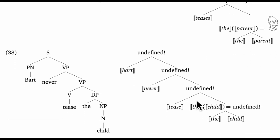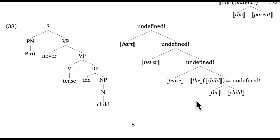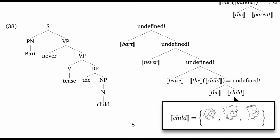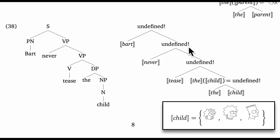Compare that with exactly the same sentence, but now with 'the child' in the direct object position. Recall that in our model, there are three children. When we apply 'the' to 'child,' the presupposition check fails, and we end up with no denotation. From there, everything falls apart: the direct object has no meaning, and so 'tease' doesn't get its argument, the VP doesn't work, 'never' comes in and doesn't get what it needs, and the result is a sentence with no meaning. We have a total collapse. So this is why you've got to accommodate.